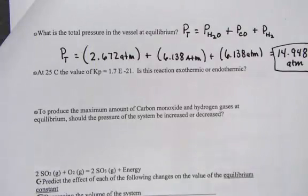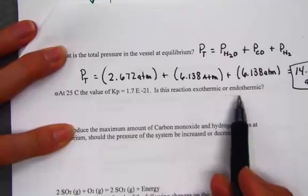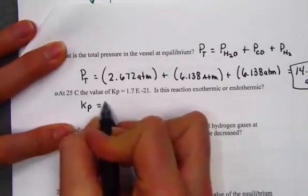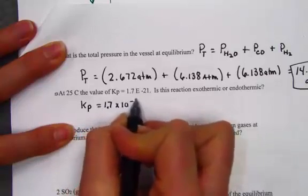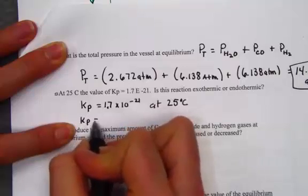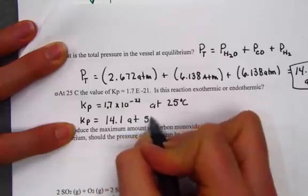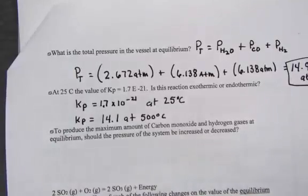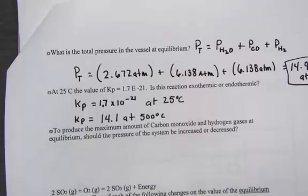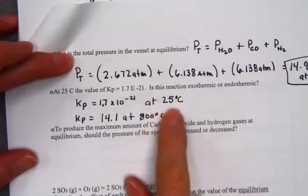The next part of our question asks us, at 25 degrees Celsius the value of Kp is 1.7 times 10 to the negative 21. Is this reaction exothermic or endothermic? Well here's what we know. Kp of 1.7 times 10 to the negative 21 is the value at 25 degrees Celsius. The Kp we were given originally in our problem was 14.1, much larger, and that was at 800 degrees Celsius. What's happened is as we cooled the reaction down the K got much smaller.